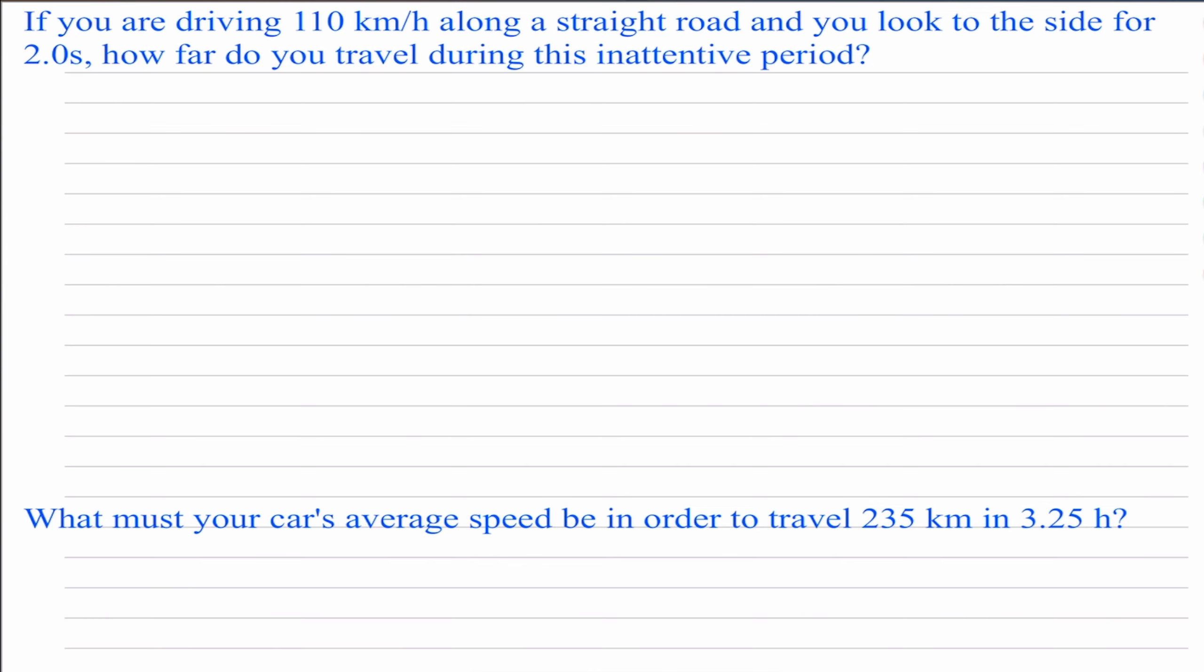Inattentive meaning that you weren't attentive to your driving because you were looking to the side of the road. So we can find that distance traveled or the displacement by rearranging the average velocity equation.